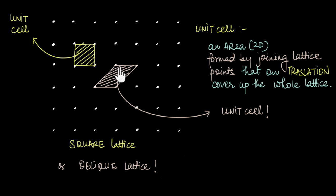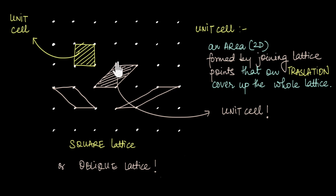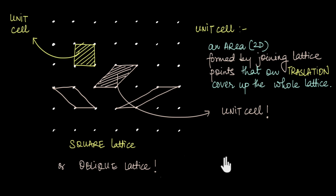Now, can you think of some other primitive unit cells that can describe this lattice? There are a few more — we can think of this lattice to be made up of oblique unit cells, or even more oblique ones. There are many such ways, but we will bunch all of these together and call them obliques. Because this particular lattice can either be thought to be made up of squares or obliques, we should either call it a square lattice or an oblique lattice. But what do we call it? This decision actually depends upon the unit cell that best describes the symmetry of the overall lattice.